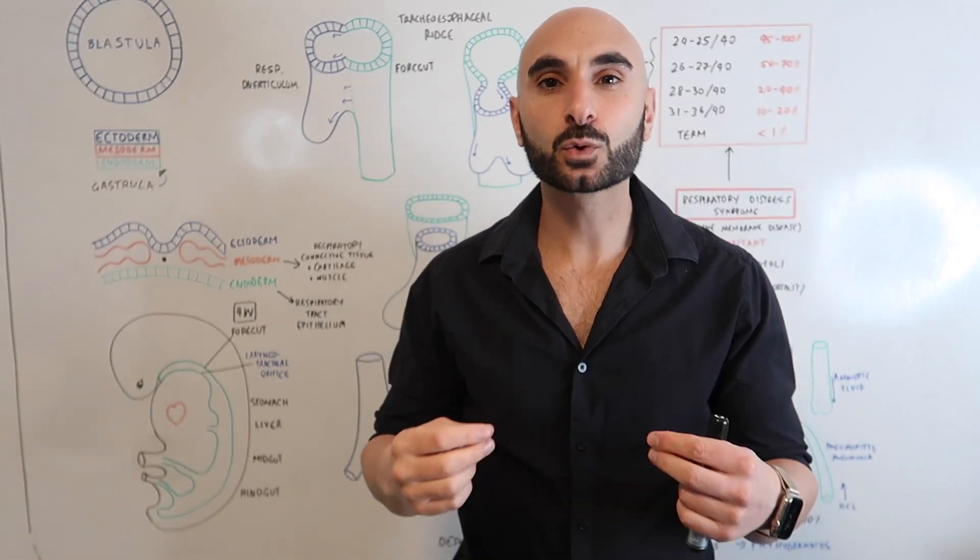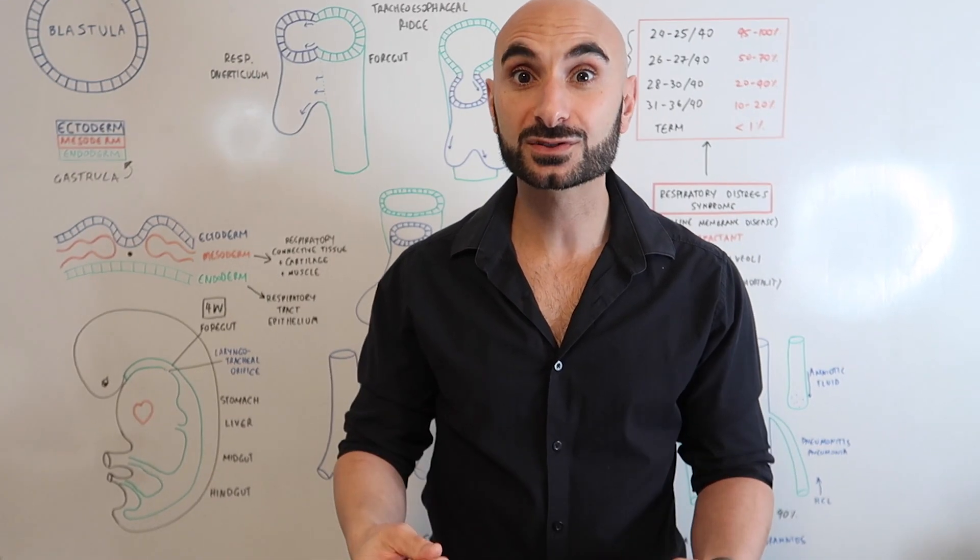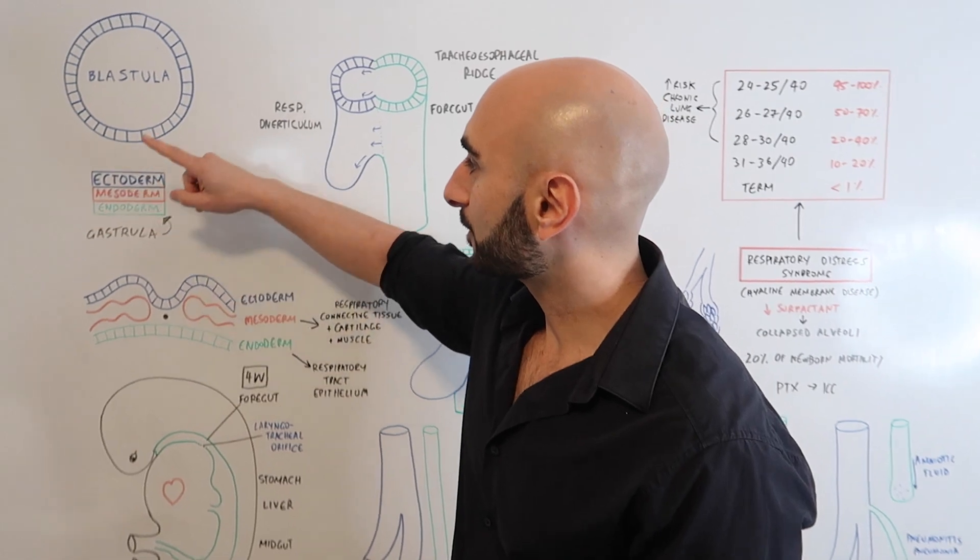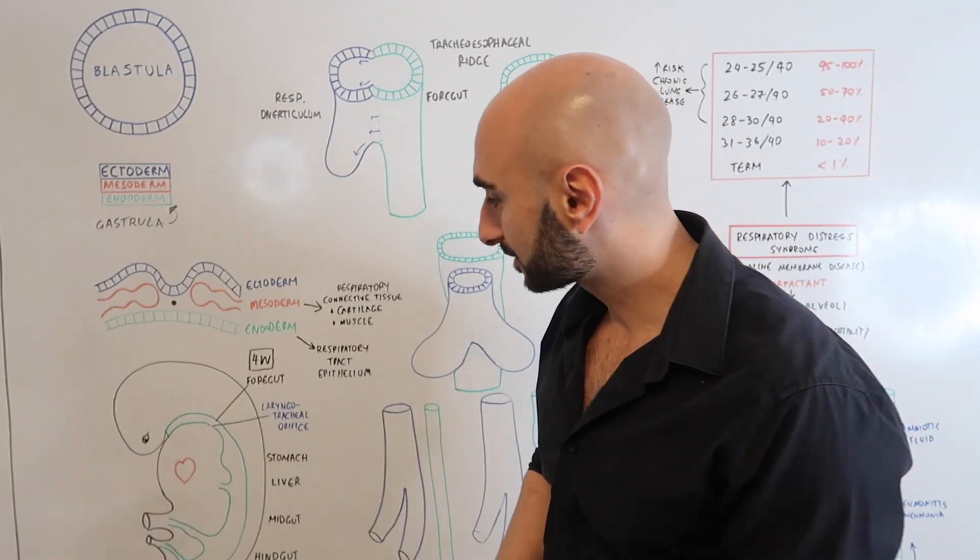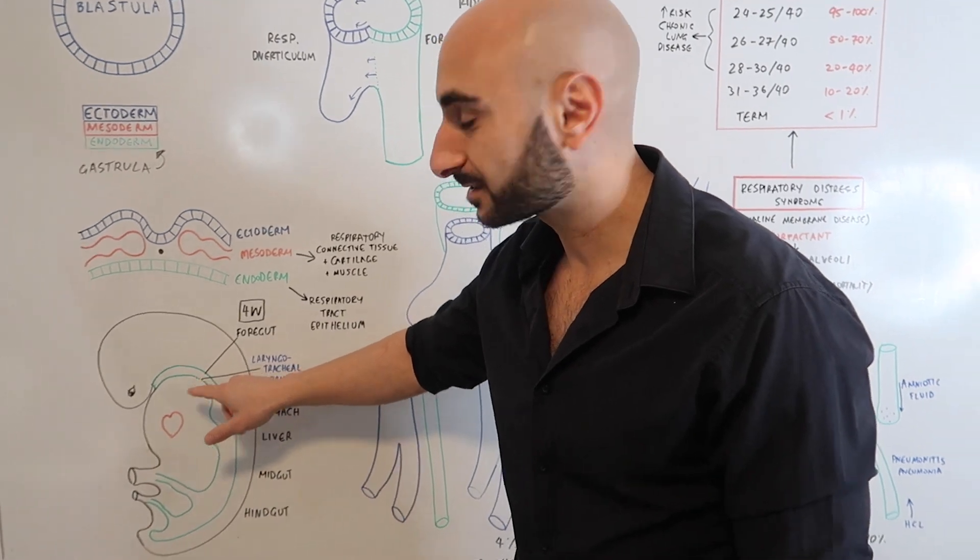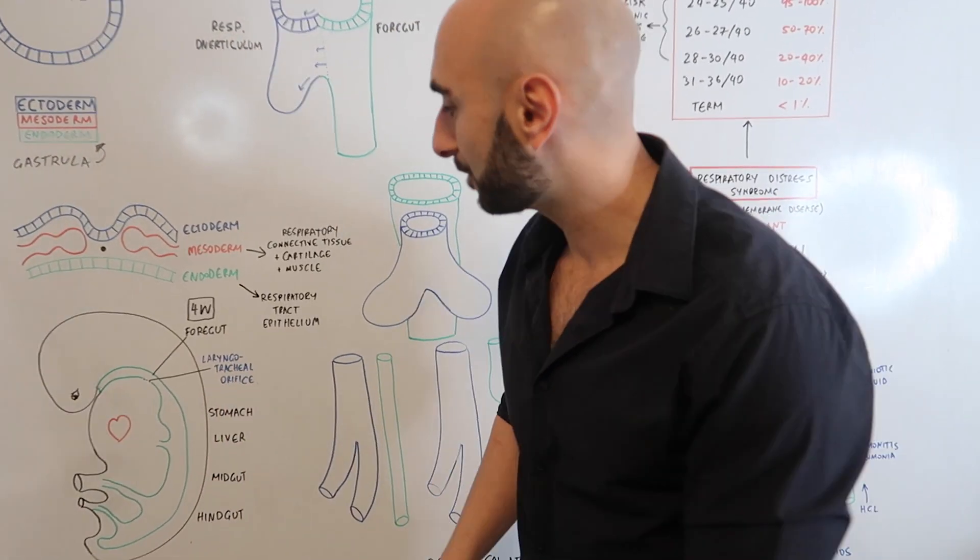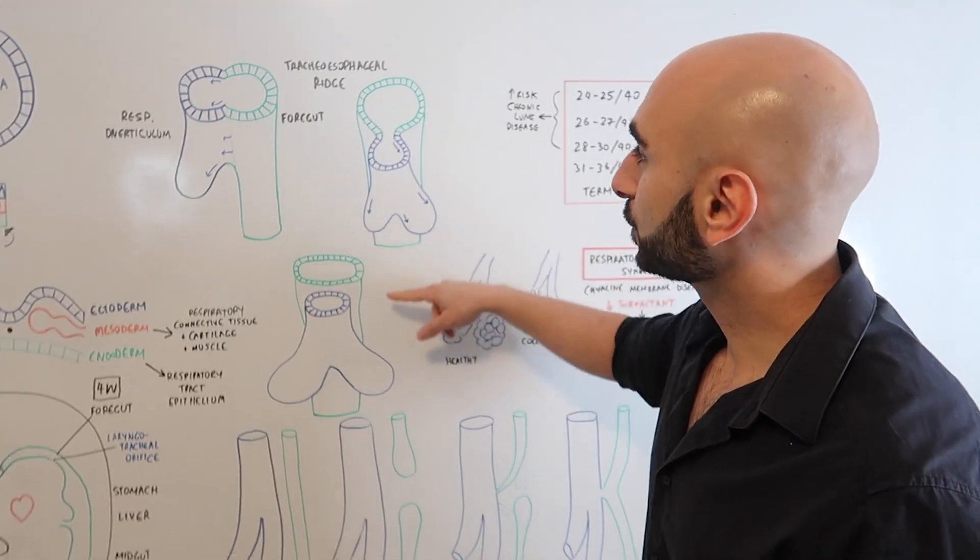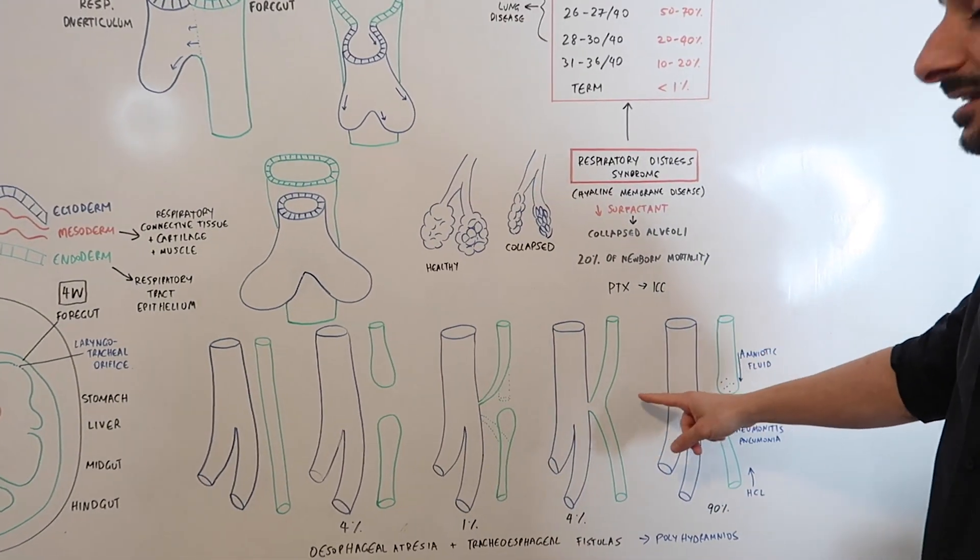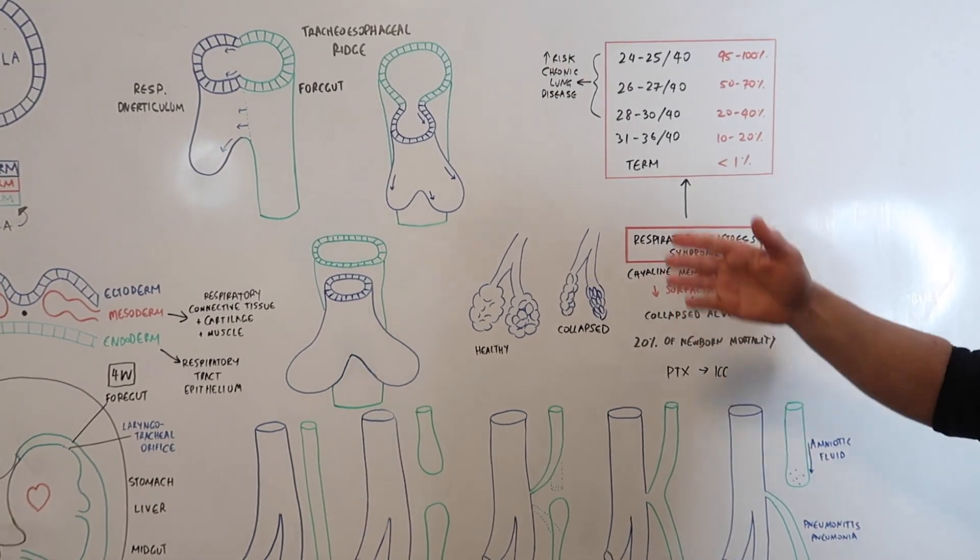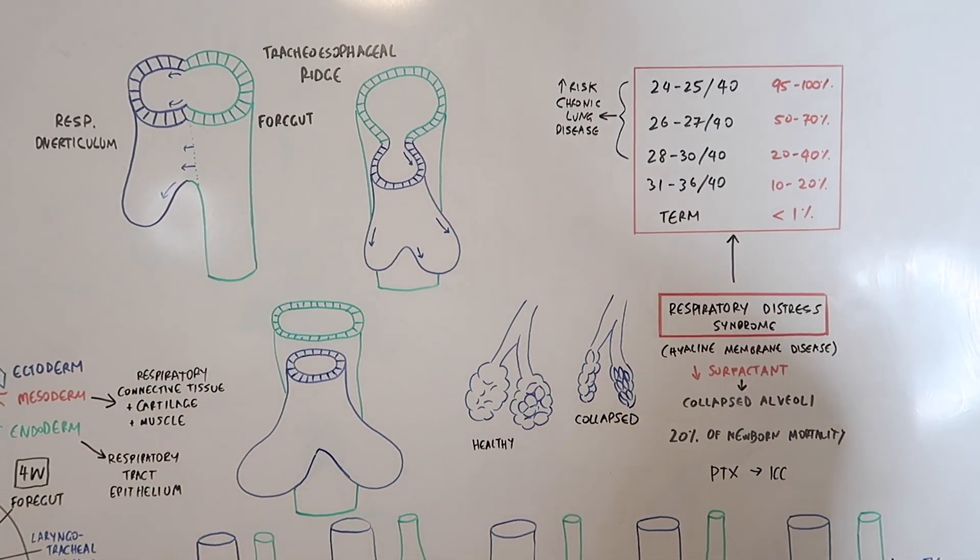We're going to begin our discussion with a quick introduction to embryology for those that are new with it by talking about the blastula and gastrulation, and then I'm going to discuss where the respiratory system specifically comes from in the embryo. We're going to talk about the trachea in relation to the foregut and then the various anomalies in their development, and we're going to finish with a discussion on respiratory distress syndrome.